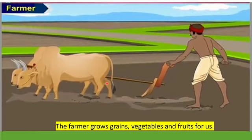Our first helper is the Farmer. What does the farmer do? The farmer grows grain, vegetables, and fruit for us. So the farmer is our helper.